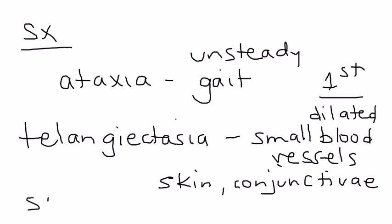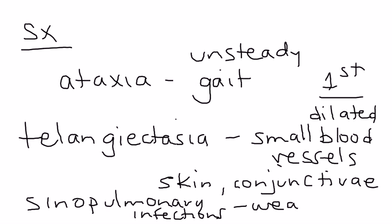The third thing that can happen is the sinopulmonary infections. The reason this happens is because you have a weak immune system. And the weak immune system is characterized by the B and T cell defects and the lack of immunoglobulins such as IgA and IgE.